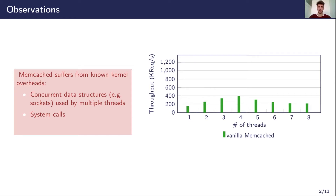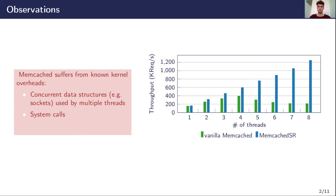As you can see in green in this graph, the throughput is even degraded when more than four threads are used. As this is a known problem, kernel contributors have added the SO_REUSEPORT socket option to the Linux kernel. It allows the kernel to allocate several sockets sharing the same interface and port. We modified Memcached to use this option and allocate a number of sockets equal to the number of threads. We named this modified version Memcached SR. As you can see in blue on the graph, this simple modification allows throughput to scale with the number of threads.